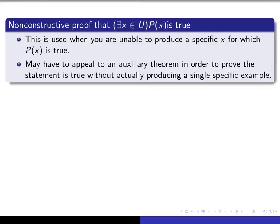Now let's talk about what we mean by a non-constructive proof that this thing is true. This is used when it's impossible for you to find a specific x for which P(x) is true. In such a case, you usually have to appeal to some other theorem, which is probably a little bit more advanced, in order to prove that there exists something for which P(x) is true, even though you can't explicitly write down what it is.